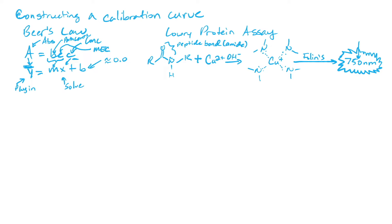You can reason that the more protein you have, the more intense the absorption will be at 750 nanometers — which is what Beer's Law says: the higher the concentration, the higher the absorbance. That's why you're able to use Beer's Law to figure out unknown concentrations — it's a direct proportional thing. So let's look at some data, which we put on the board today. From our Lowry protein assay, we have samples in micrograms of protein: zero, five, ten, fifteen, twenty, and twenty-five.